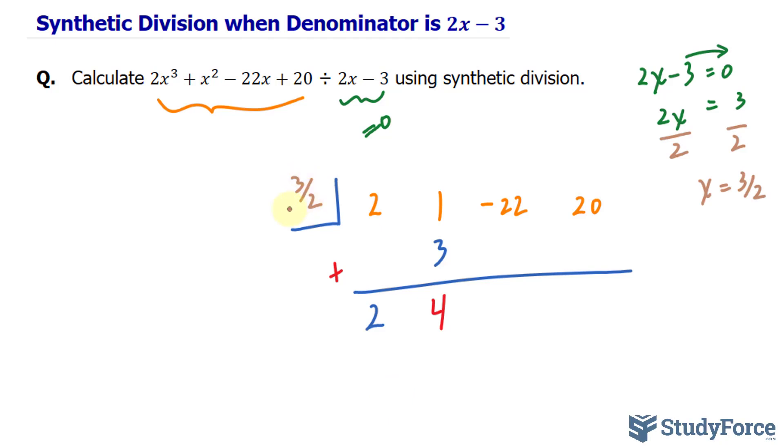Again, we'll take 3 over 2 and multiply it to 4. 3 over 2 times 4 gives us a value of 6. Now, if you're weak with that, you can always use your calculator. But by now, you should be able to multiply fractions and integers quite quickly. We have negative 22 plus 6, and that's negative 16.